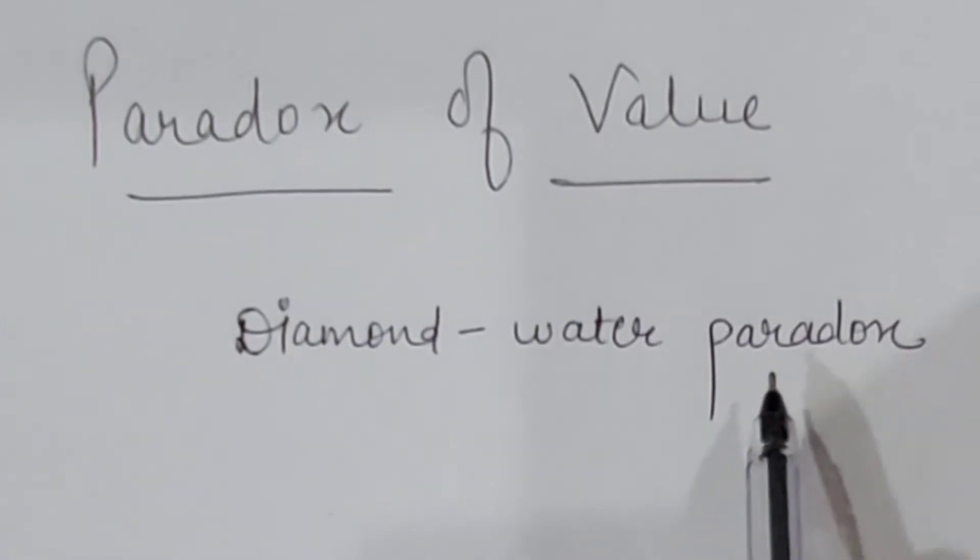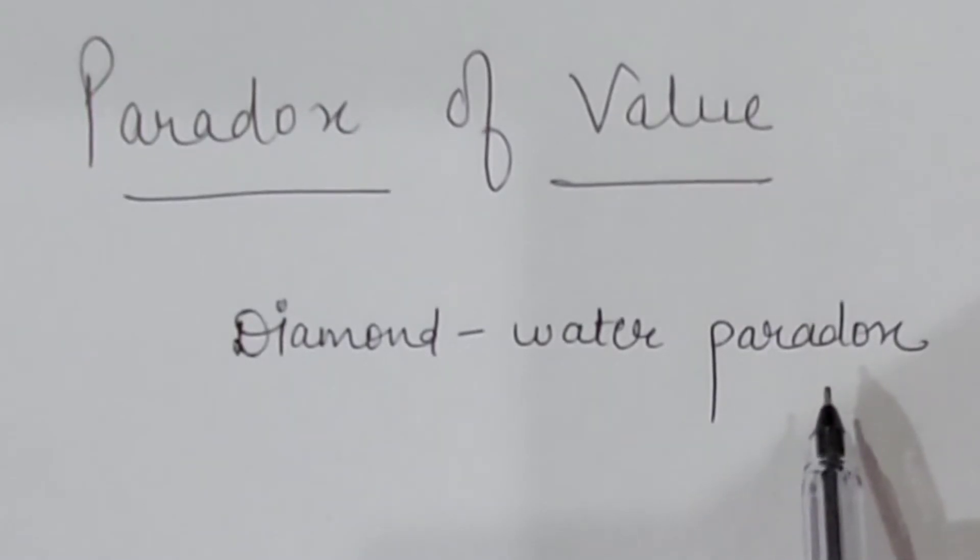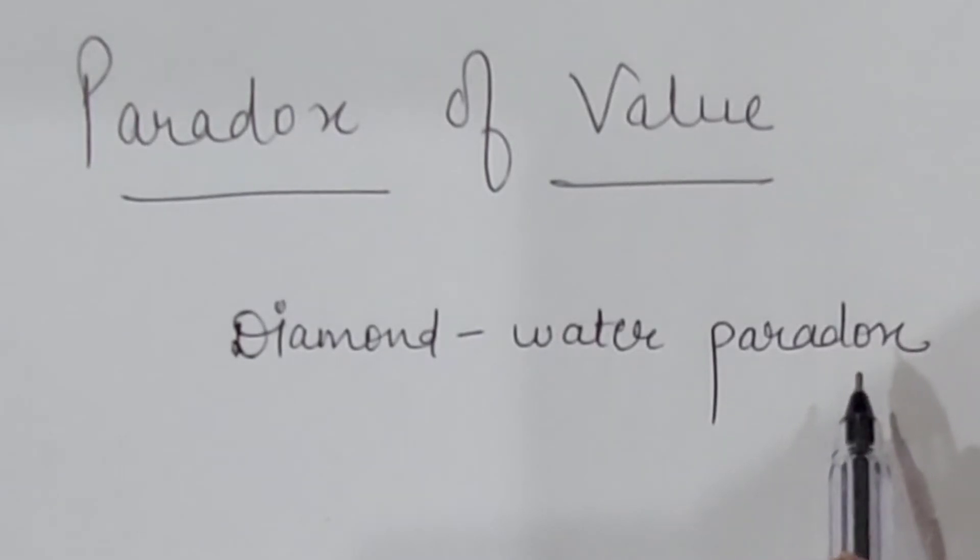It is based upon the difference between total utility and marginal utility's practical importance. That difference between TU and MU is practically very important. How? Let's see it.